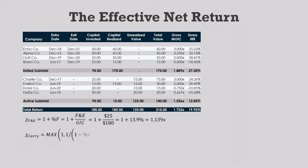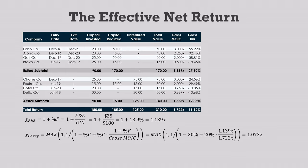Then we calculate the portfolio's carried interest multiplier. It's an ugly formula, but there's only three variables: the carry rate, which is usually 20%, the F&E multiplier, and the gross multiple of invested capital. When we plug these in, we get a carry multiplier of 1.073x.